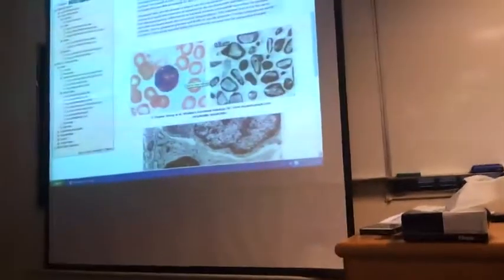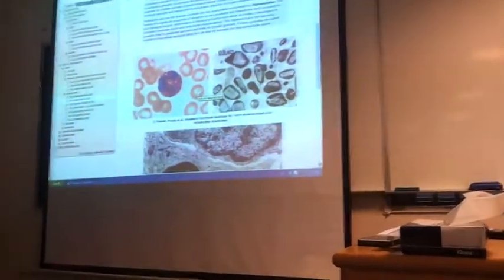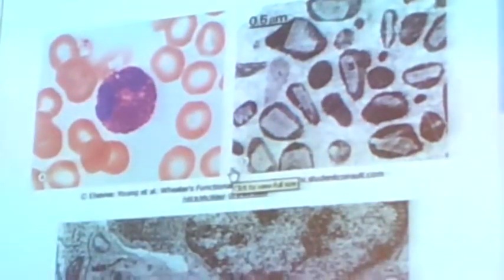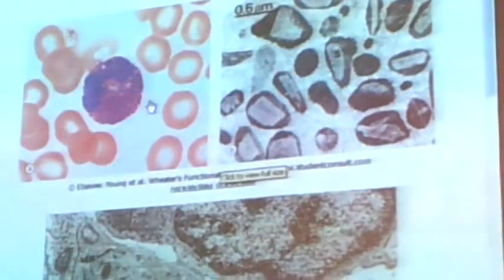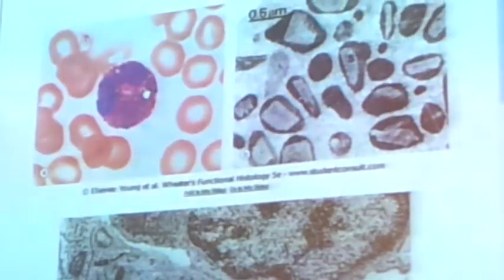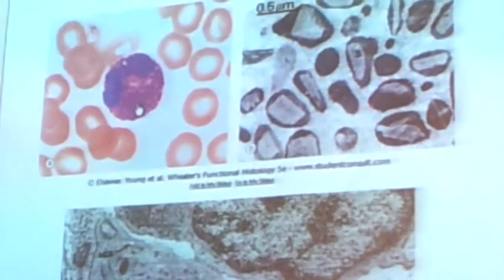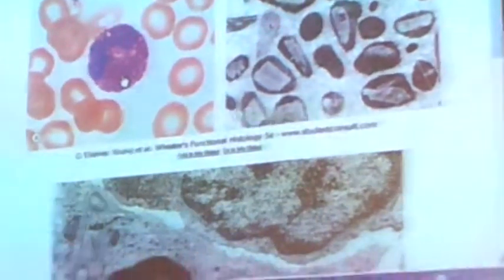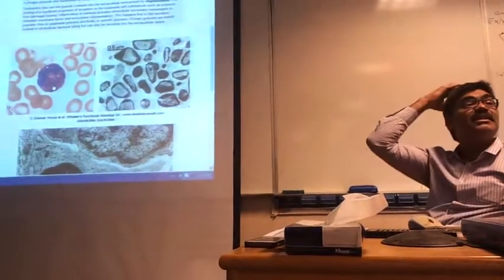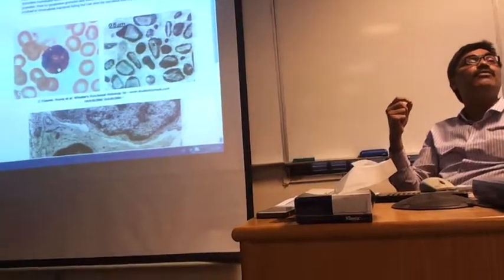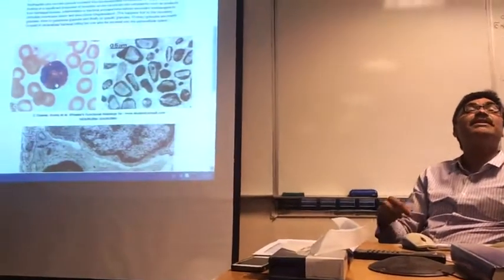This is an eosinophil - you can see this cell among all the RBCs. This is also an electron microscopic view. Eosinophils have large granules - do you see all these small dots? They are granules. Eosinophilic granules are big granules, and one characteristic is that they show a phenomenon called metachromasia.